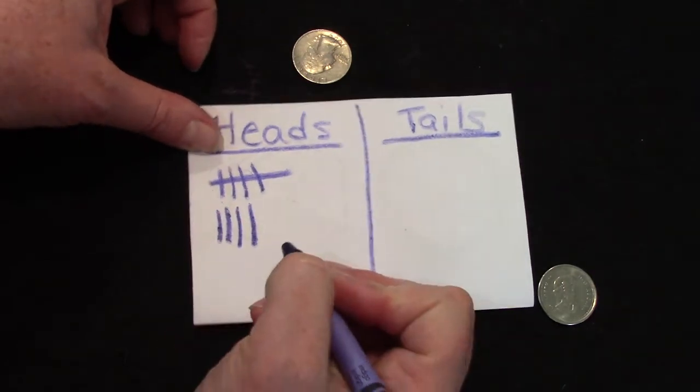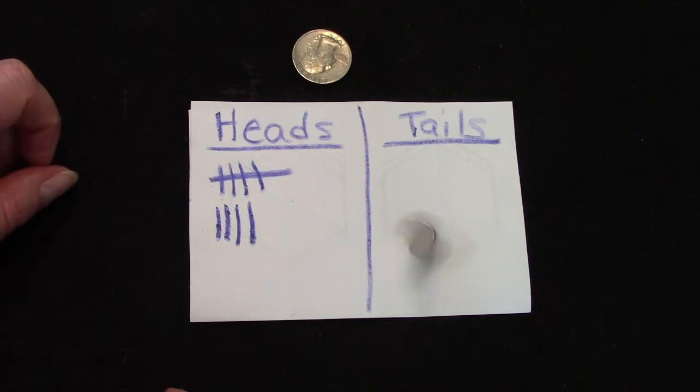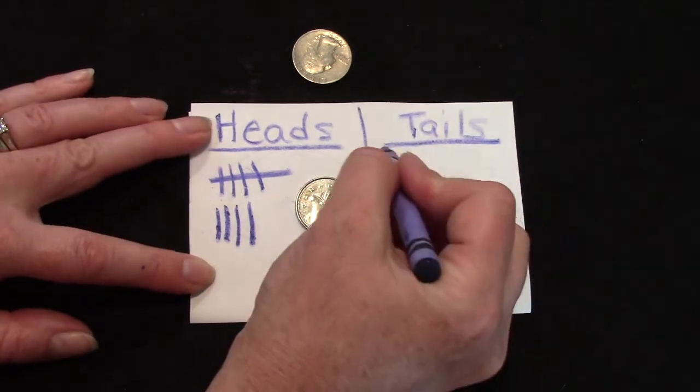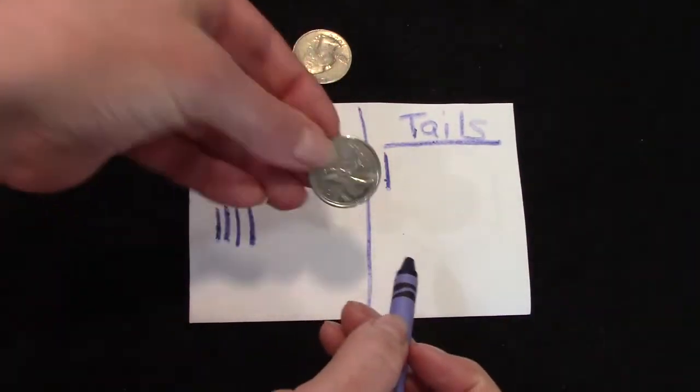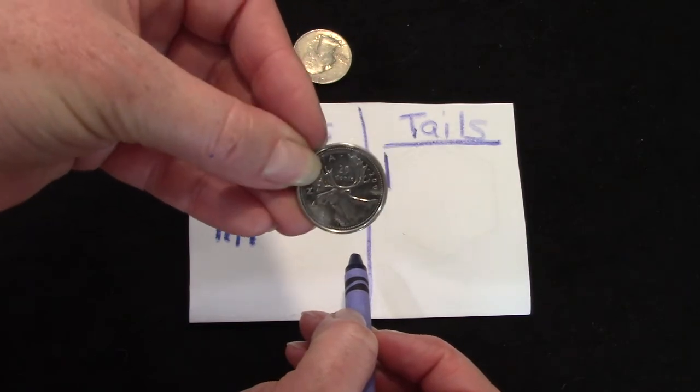If I were to flip them up in the air, maybe we would have a better chance of hitting a tails. Finally! Our first tails! This is a Canadian coin and it has a caribou on the tail side.